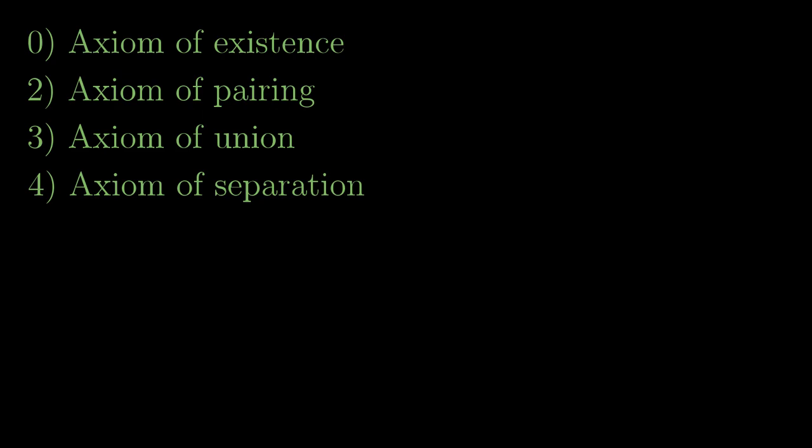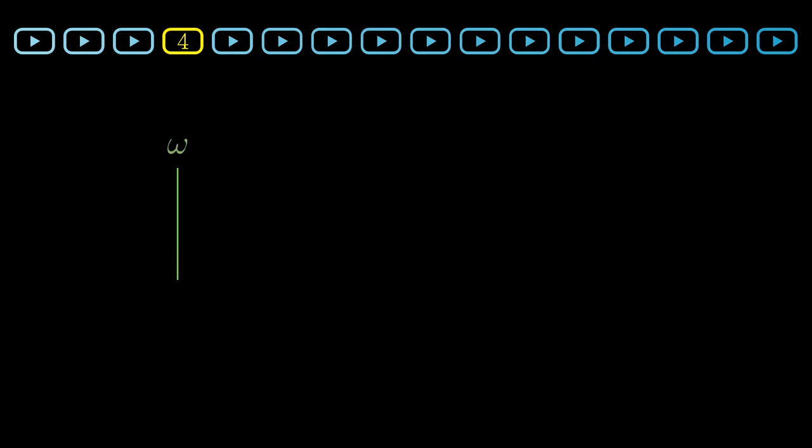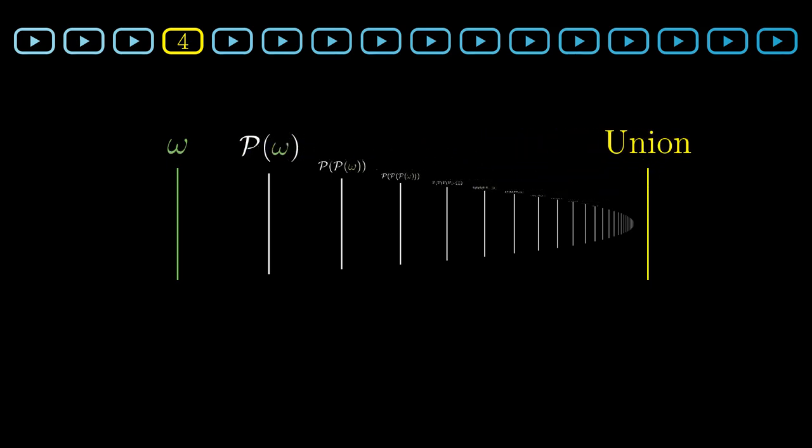Even just axioms of existence and pairing will make the world of formal sets infinite. We can pack sets into pairs and create new and new pairs. On the other hand, there is no guarantee so far that there are any infinite sets. We are going to introduce axioms for working with infinity soon, but first let's recall the construction of a large set from the beginning of the fourth chapter about transfinite recursion. We started with the set of natural numbers with omega. Then we considered the power set P of omega, the set of all subsets of omega. We repeated this operation twice, three times and we continued over all the natural numbers. And finally we took the union of these sets, obtaining a set larger than all the sets before.